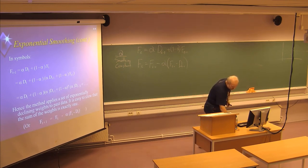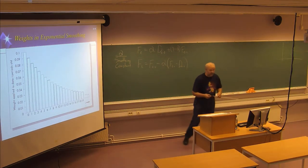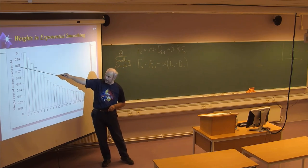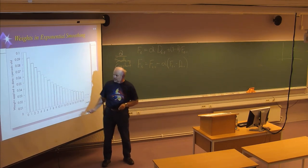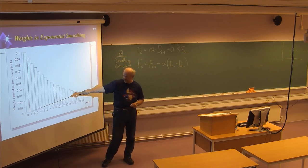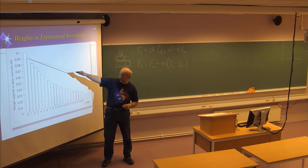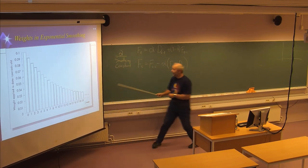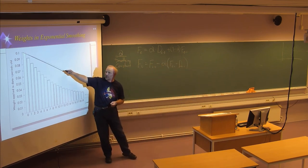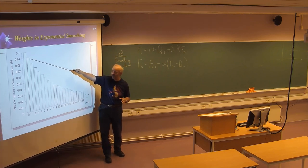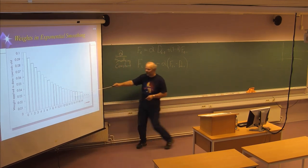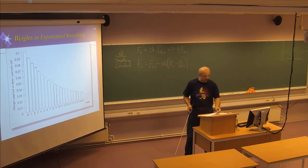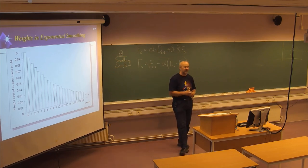One last slide before the break shows the weight applied to data that is i periods old. With a smoothing constant of 0.1, the most recent observation has weight 0.1, the second most recent has weight 0.09, and the values continue to get lower for older data. We'll take a break and continue in 15 minutes with examples on this exponential smoothing method.